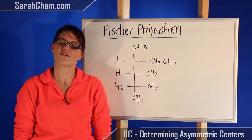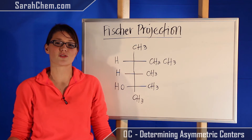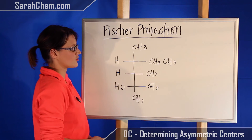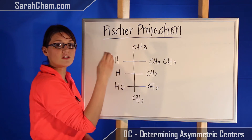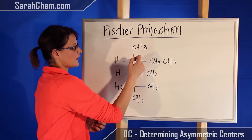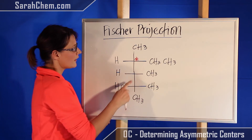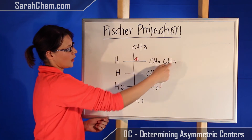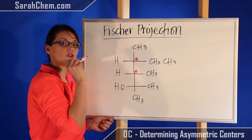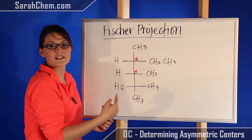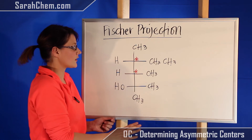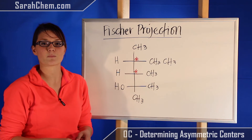Now let's take a look at a Fisher projection and find our asymmetric centers. The same rules apply regardless of the format: sp3 hybridized with four different groups attached. This carbon has three H's so it's not one. This carbon has an H, an ethyl, a methyl, and this entire group sitting below it — so this one is definitely an asymmetric center. This next one has a methyl, an H, this bottom part, and this top part — all different from each other, so another asymmetric center. This one here would not be asymmetric — careful: it has a methyl and another methyl, so it doesn't have four different groups. This particular projection has two asymmetric centers.